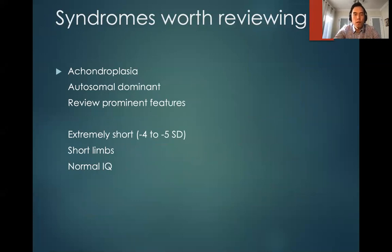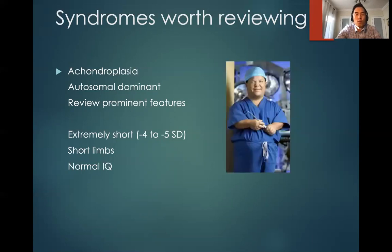Achondroplasia is the most common skeletal dysplasia. Make sure you review all the prominent skeletal features. They are extremely short — on average minus 4 to minus 5 standard deviations — with short limbs but normal IQ. The example shown is actually an orthopedic surgeon who also has achondroplasia.